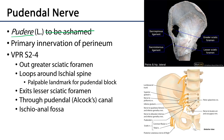The pudendal nerve is a product of branches from ventral primary rami of sacral nerves S2, S3, and S4. I remember this as 'S2-3-4 gets your genitals off the floor.' You're welcome very much for that being burned into your mind.